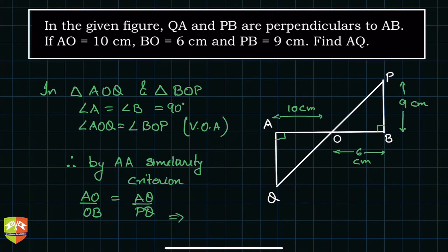From here, I can find out the value of AQ. So AQ is equal to AO by OB into PB. AO is 10, OB is 6, and PB is 9. So if I simplify this, I get 15 cm as the answer.